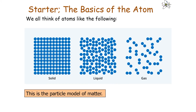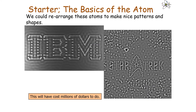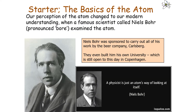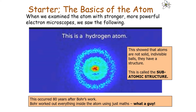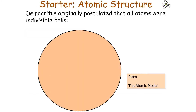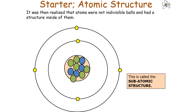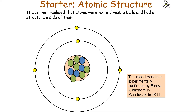Previously, we thought of atoms like solids, liquids, and gases in the particle model of matter. When we looked at substances under electron microscopes, it looked quite similar — this is an actual picture of nickel atoms, which can be rearranged into patterns and shapes. But our perception of the atom changed when scientist Niels Bohr examined the atom. With stronger microscopes, we saw that atoms were not solid, indivisible balls, but rather have a subatomic structure. It was originally postulated that all atoms were indivisible balls — the atomic model — but by the end of the 19th century, we realised this was not correct.